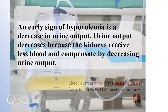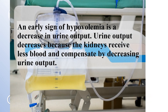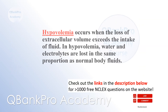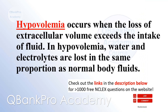An early sign of hypovolemia is a decrease in urine output. Urine output decreases because the kidneys receive less blood and compensate by decreasing urine output. Hypovolemia occurs when the loss of extracellular volume exceeds the intake of fluid. In hypovolemia, water and electrolytes are lost in the same proportion as normal body fluids.